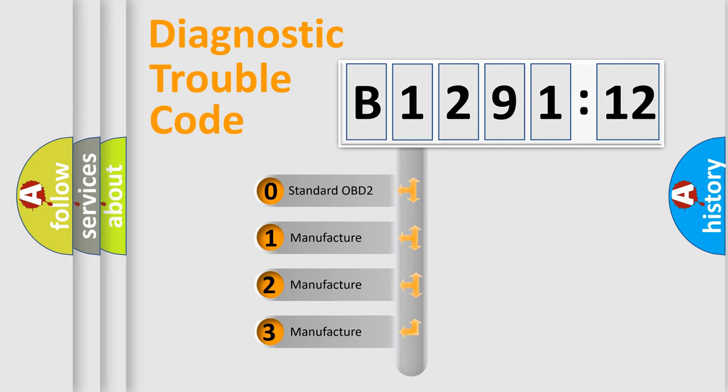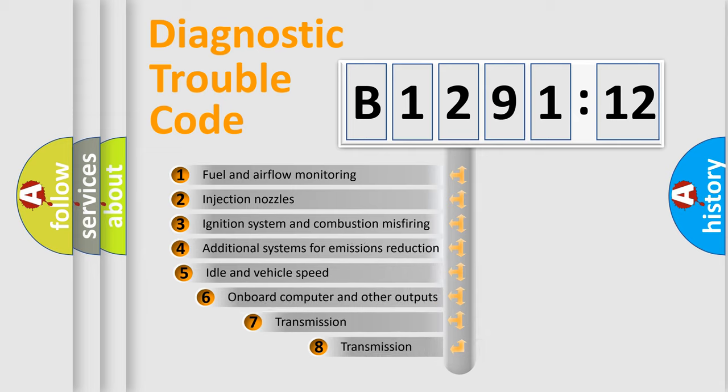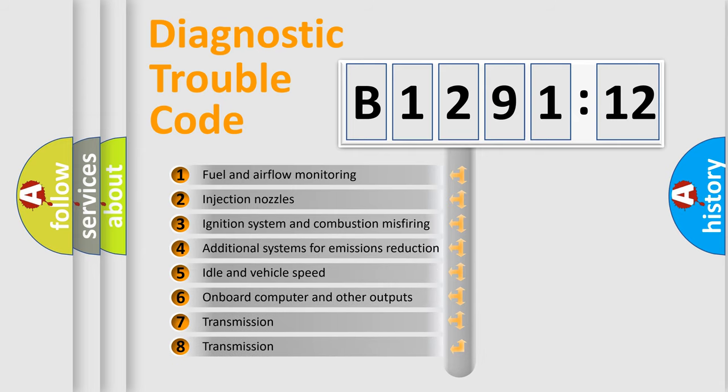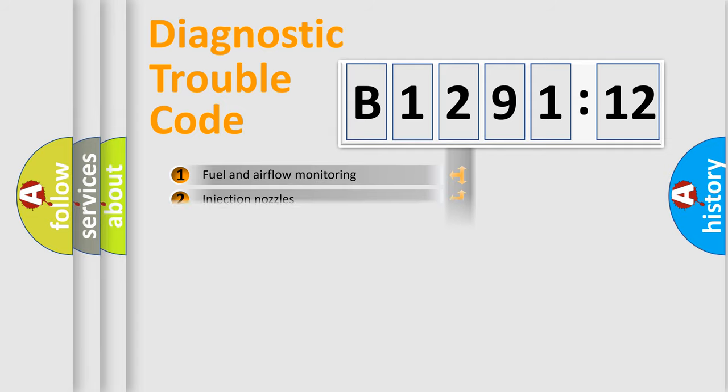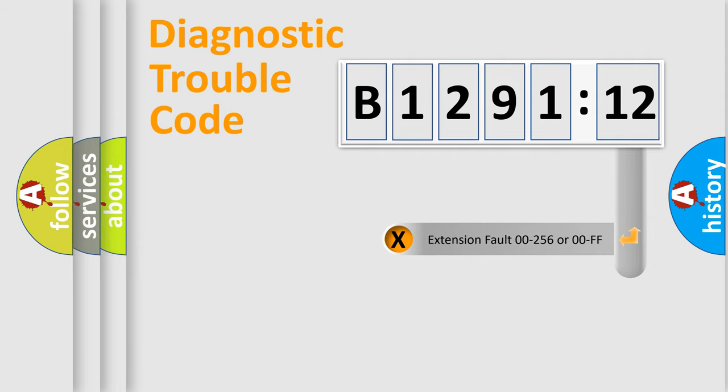If the second character is expressed as zero, it is a standardized error. In the case of numbers 1, 2, or 3, it is a more specific expression of a car-specific error. The third character specifies a subset of errors. Only the last two characters define the specific fault of the group. The add-on to the error code serves to specify the status in more detail.